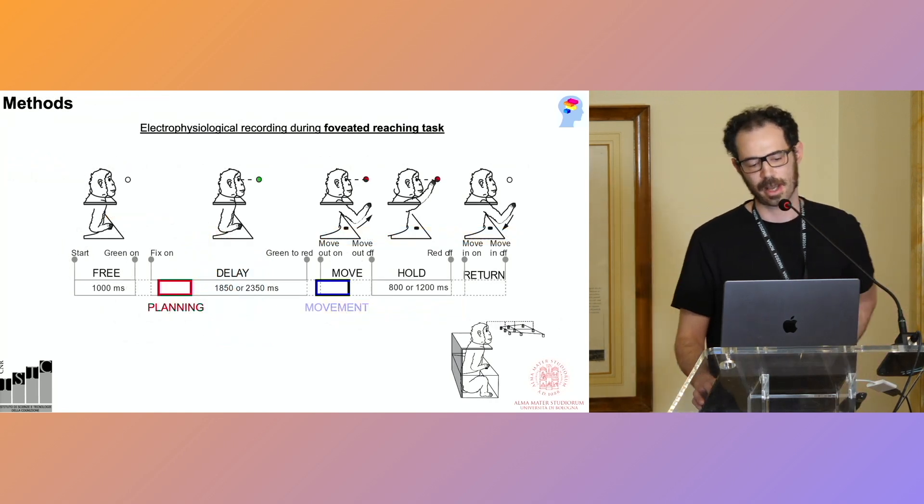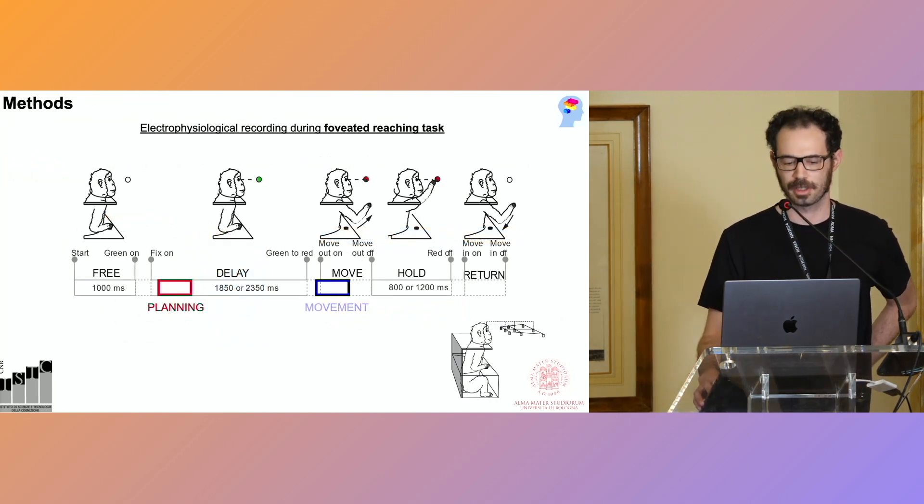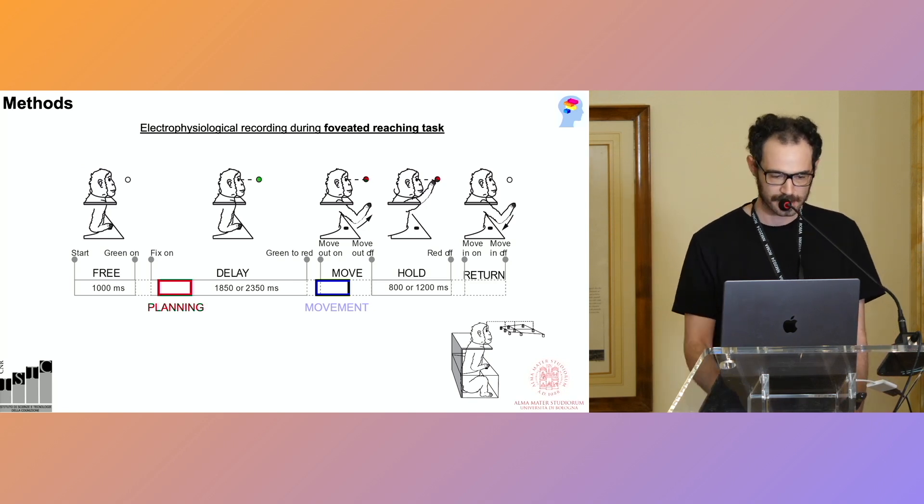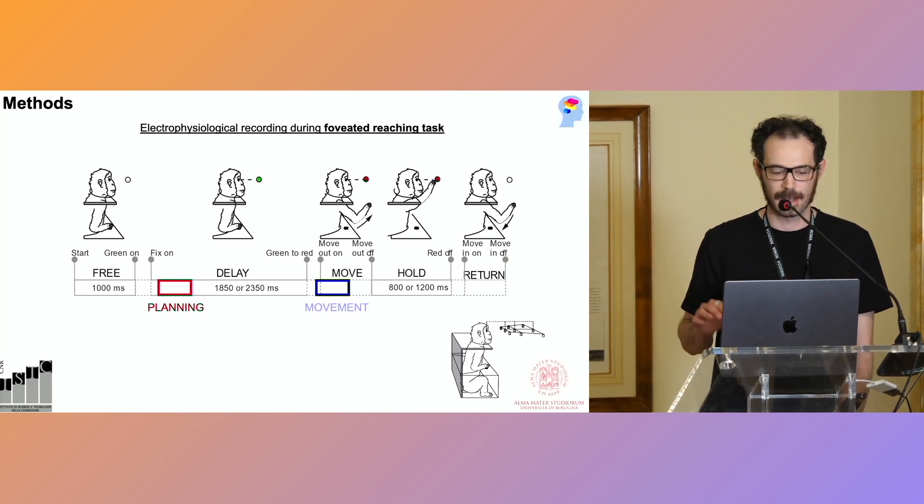So to achieve this goal, I have analyzed neural data in these three areas during a forward reaching task. This is the task sequence. A trial began when the monkey pressed a button on the monkey chair and was free to look where it wanted.